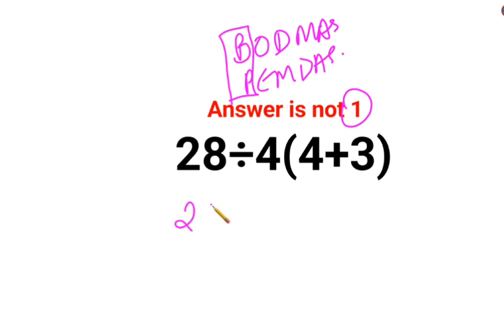So this question then changes to 28 divided by 4. There is no sign between 4 and this bracket, which means obviously the value in the bracket gets multiplied by 4, which is 4 plus 3 is 7.